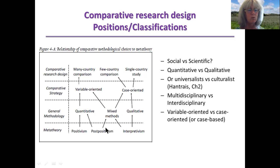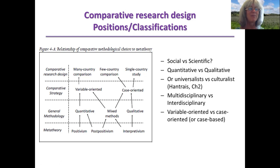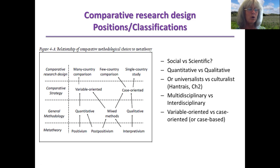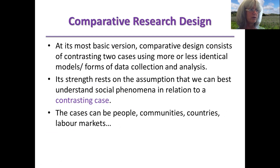All these different research methods fall into different groups and categories. According to one author, you have positivism or post-positivism. According to other authors, it's not that simple to divide things into just those two groups. We'll talk about that a little before moving on to examples of cross-country comparative research.